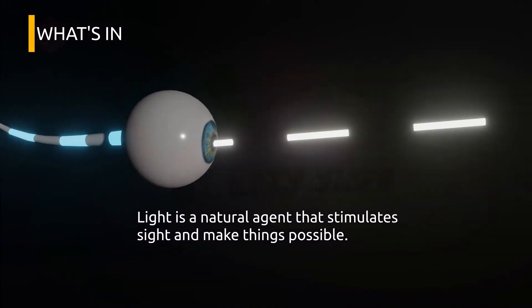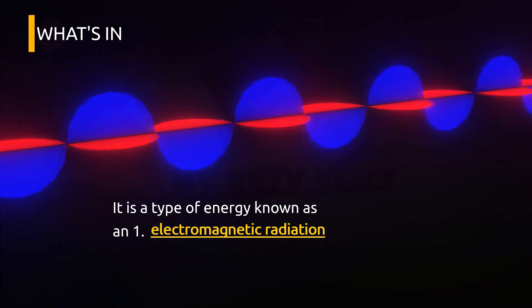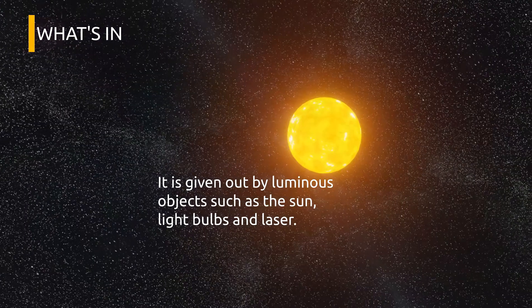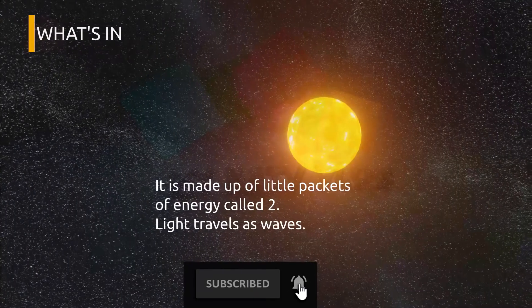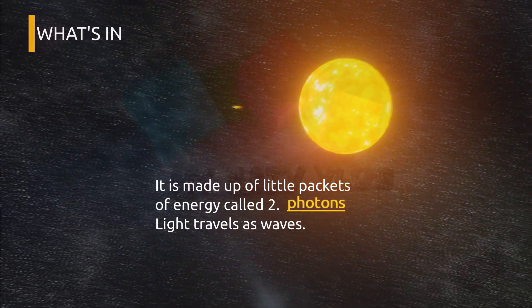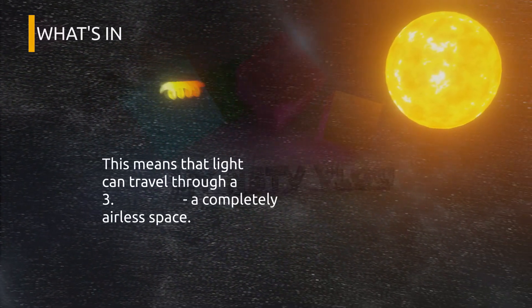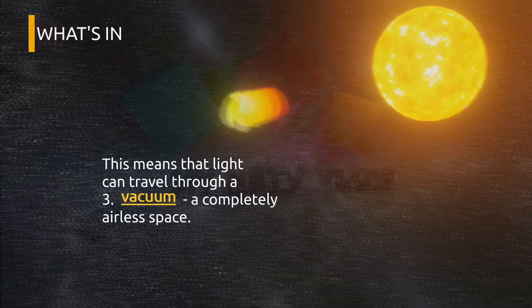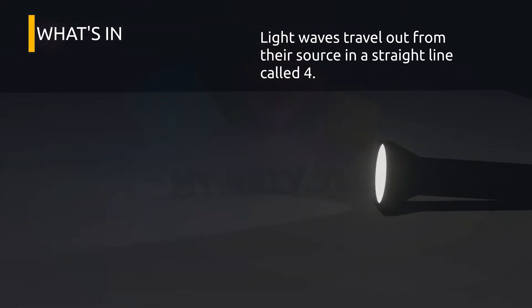Let's check and learn something about the behavior of light. Light is a natural agent that stimulates sight and makes things visible. It is a type of energy known as electromagnetic radiation. It is given out by luminous objects such as the sun, light bulbs, and lasers. It is made of little pockets of energy called photons. Light travels as waves, but unlike some waves, it does not need any material to carry its energy along. This means that light travels through a vacuum, a completely airless space. Light waves travel out from their source in a straight line called rays.